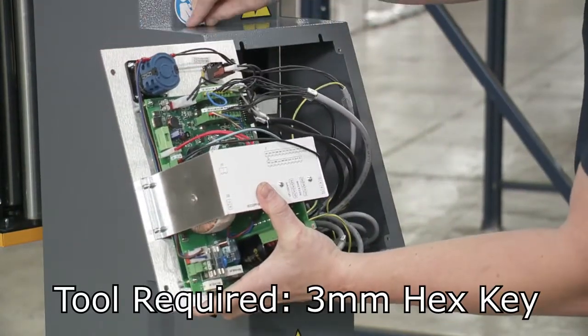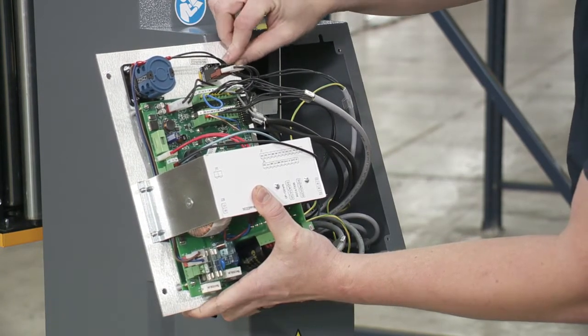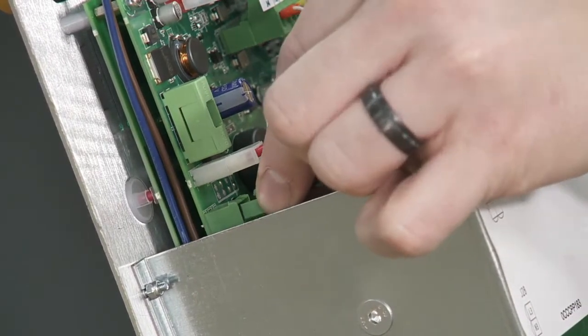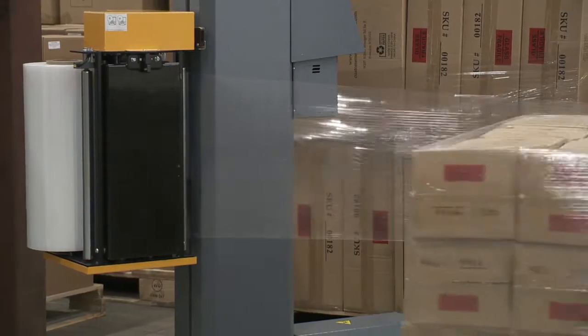Remove the four screws attaching the control panel. Flip the panel over and attach for easy access. Ensure this connector, labeled J11, is fully seated in the terminal.